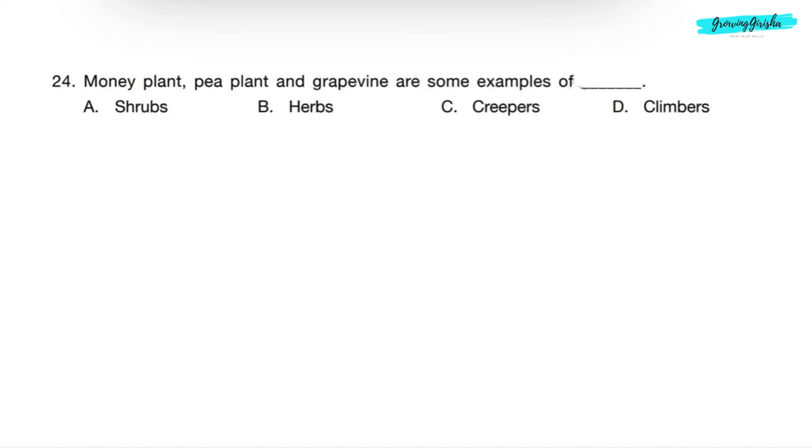Question 24: Money plant, pea plant and grapevine are some examples of climbers. They have weak stems and need a support of other plant, wall or stick to grow. So correct answer will be option D: Climbers.